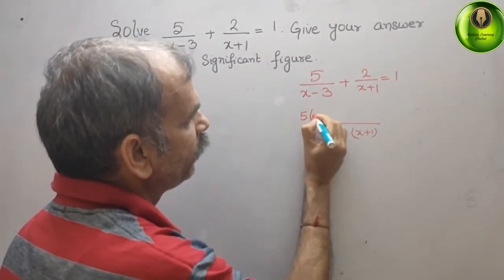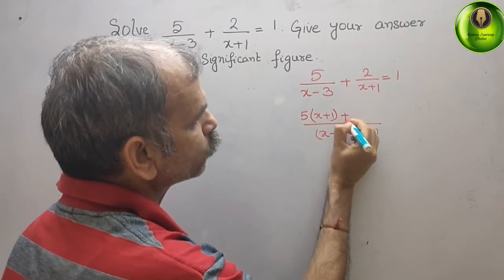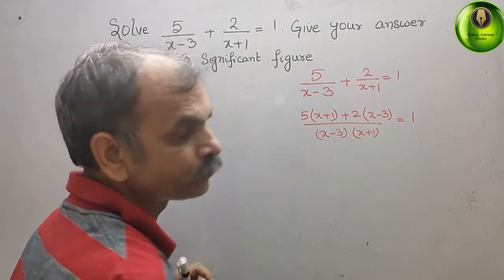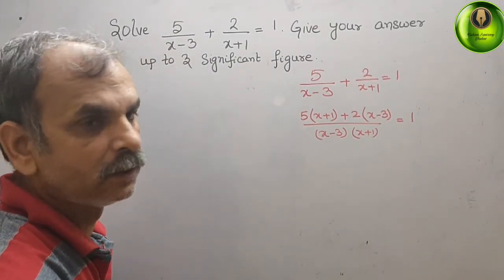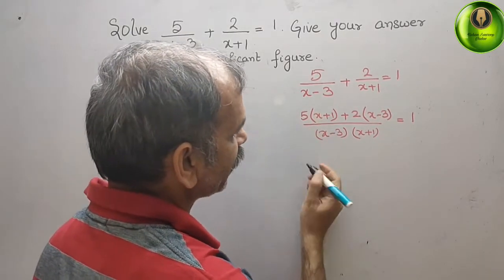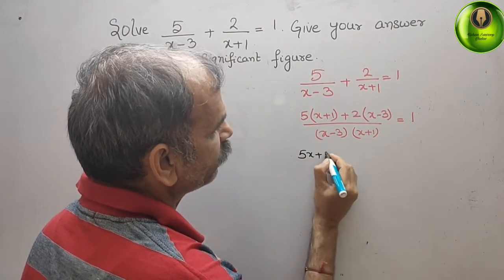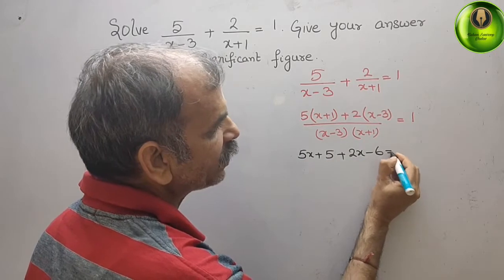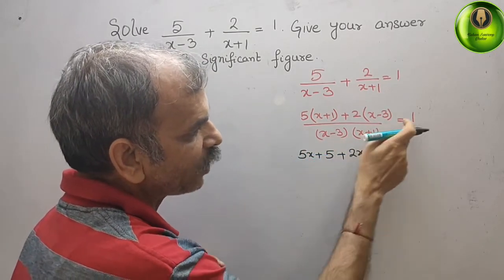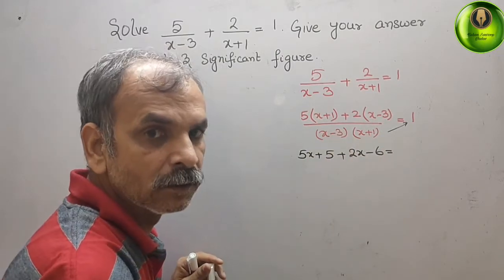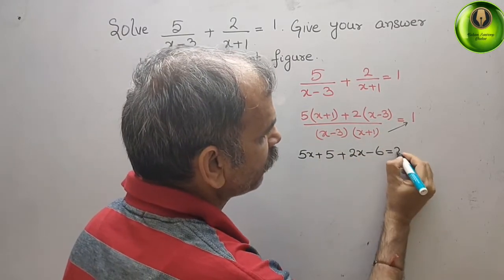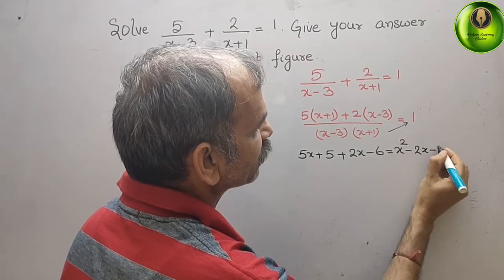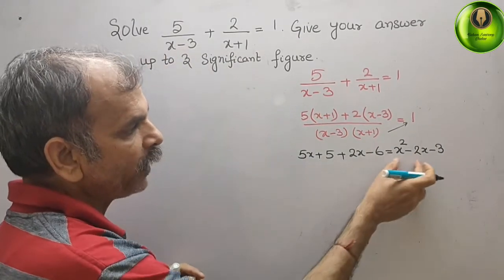After cross multiplying, we get: 5(x+1) + 2(x-3) = 1 · (x-3)(x+1). Expanding: 5x + 5 + 2x - 6 = x² - 2x - 3.